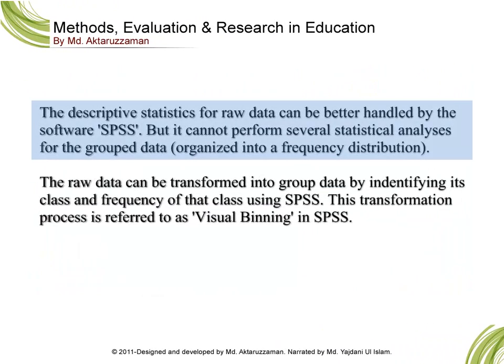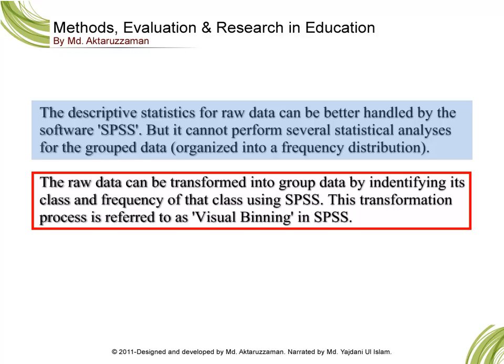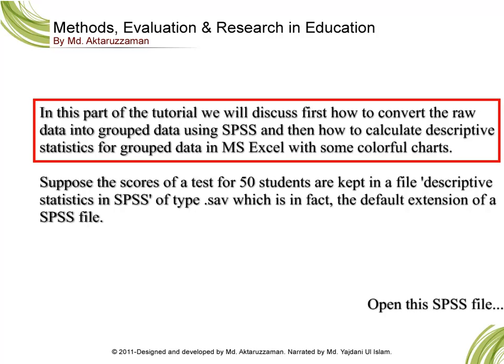The descriptive statistics for raw data can be better handled by the software SPSS, but it cannot perform several statistical analyses for group data organized into a frequency distribution. However, the raw data can be transformed into group data by identifying its class and frequency using SPSS. This transformation process is referred to as visual binning in SPSS. In this part of the tutorial we will discuss how to convert raw data into group data using SPSS, and then calculate descriptive statistics for group data in MS Excel with colorful charts.